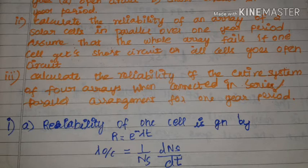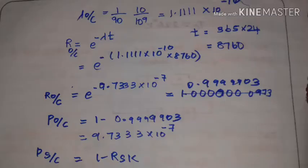First, the reliability of one cell is given by R equals e to the power minus lambda t. Lambda is given by 1 over ns multiplied by dns divided by dt, where dns represents the number of surviving units.